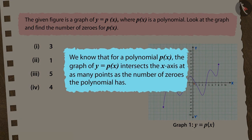We know that for a polynomial px, the graph of y equals px intersects the x-axis at as many points as the number of zeros the polynomial has.